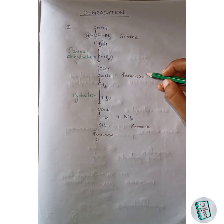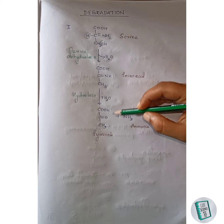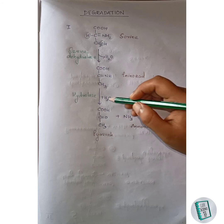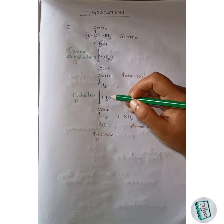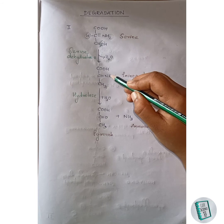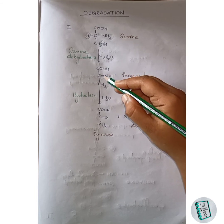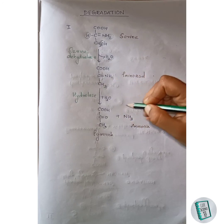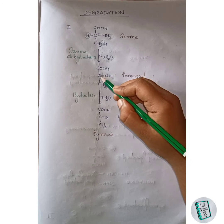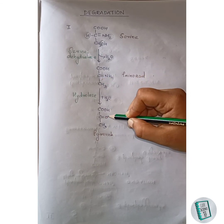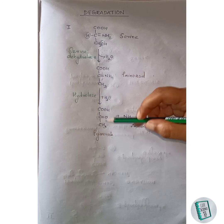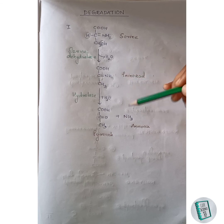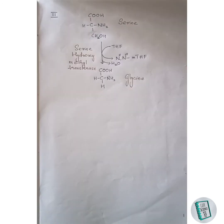This amino acid then undergoes hydrolysis in the presence of a water molecule to form pyruvate and ammonia. The water molecule donates two of its hydrogen atoms to the NH group, forming NH3, which splits off as ammonia. The remaining oxygen of the water molecule joins with this carbon as a C double bond O, forming pyruvate. Pyruvate and ammonia are the end products of the first degradation pathway of serine.